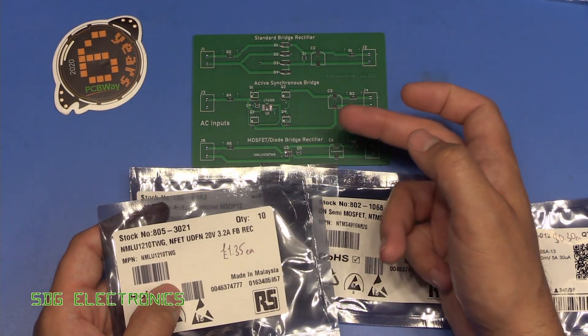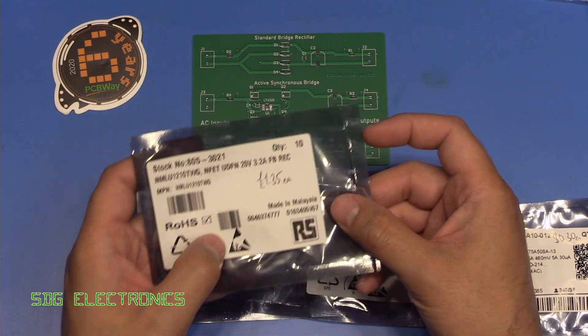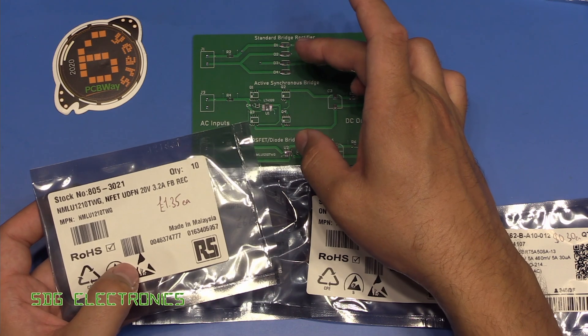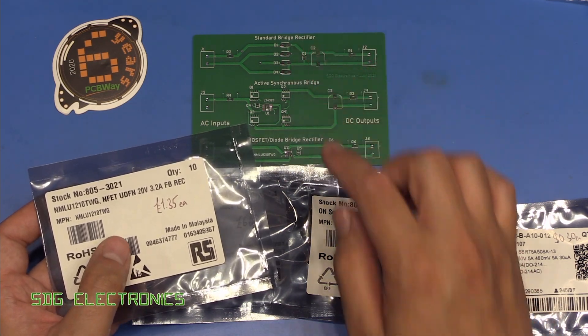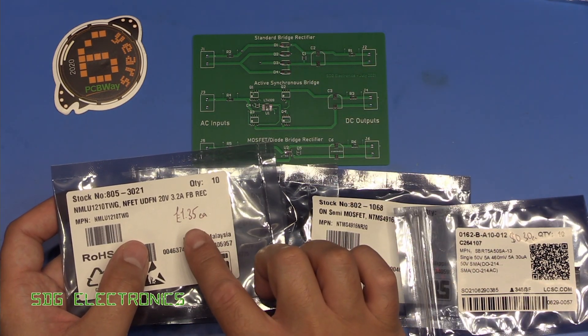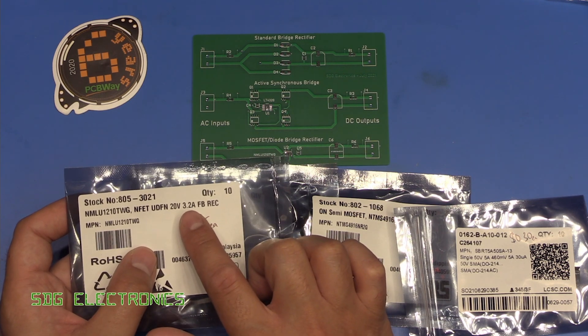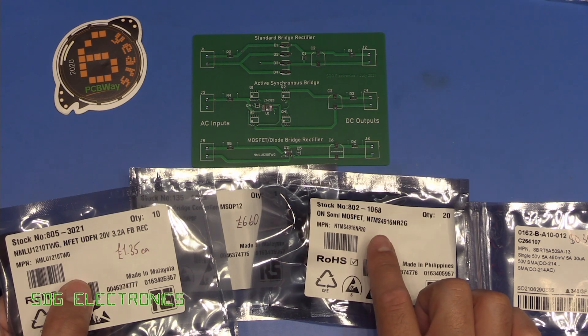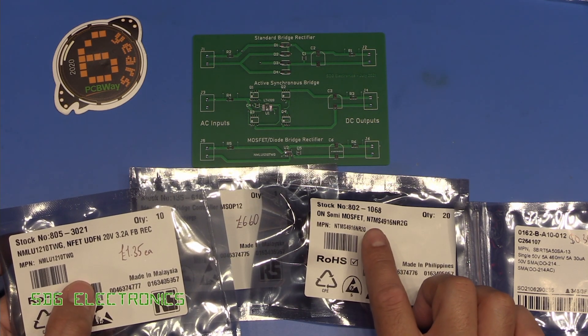Then finally, the hybrid MOSFET diode bridge rectifier. These coming at £1.35 each. So a fairly reasonable price, quite similar to the bridge rectifier at the top here. Just slightly more expensive, slightly lower current rating. So this one is only rated to 3.2 amps. I think these MOSFETs are good for probably about 10 amps, if I remember correctly, something like that.